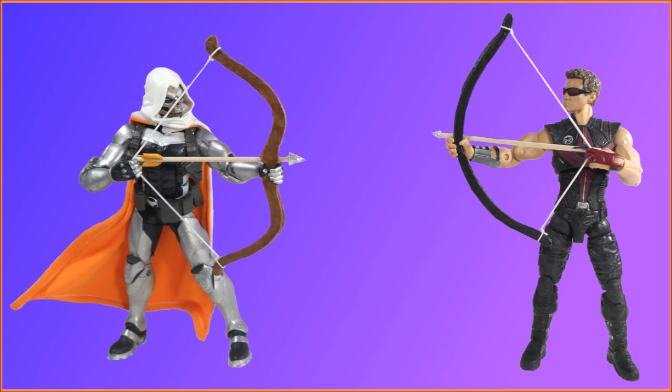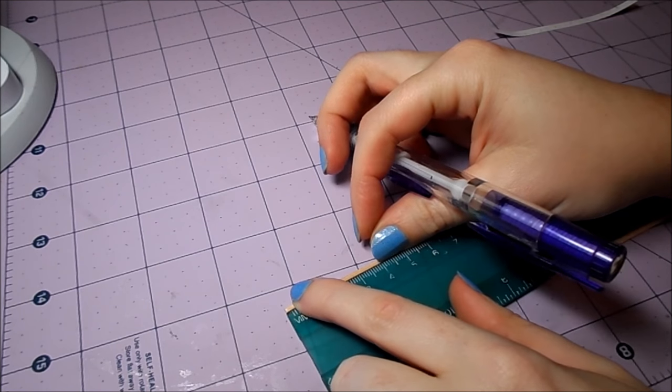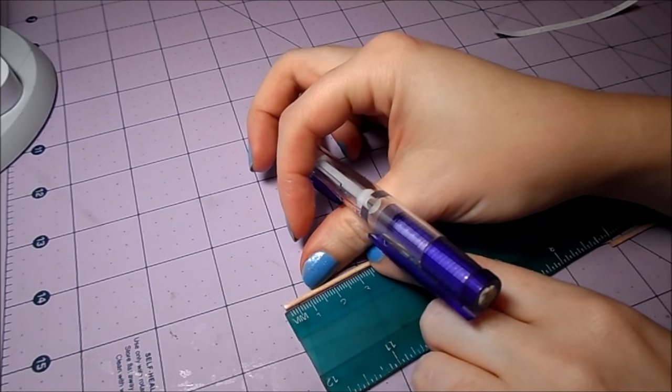Ideally, you want the tip or head of the arrow to remain past the edge of the bow. Otherwise, the archer is in danger of shooting themselves in the hand. Apparently, that can happen if the arrow is too short. Ew!